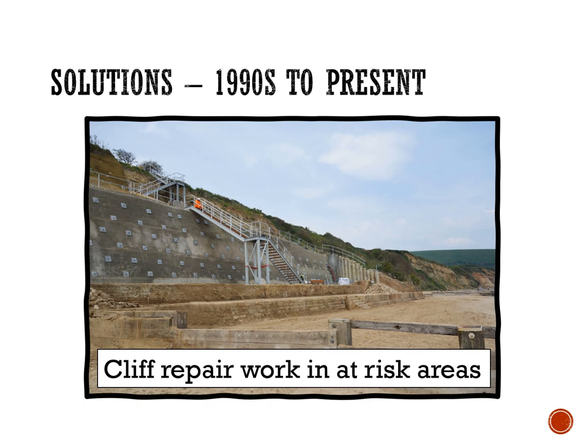Cliff repair work has also taken place in at-risk areas. This image shows work at the base of a hotel — the hotel actually funded this cliff repair work. The cliff has been pinned in place so it's less likely to slump and slide. Sea defences have been put in at the base to prevent waves eroding it, and drainage has been run through the cliff to prevent it becoming saturated, because saturation would make mass movement more likely. All of this is designed to protect the hotel building at the top, which is an extremely valuable use along the coastline.